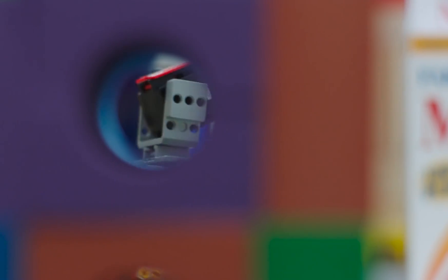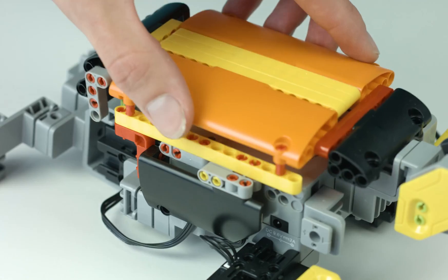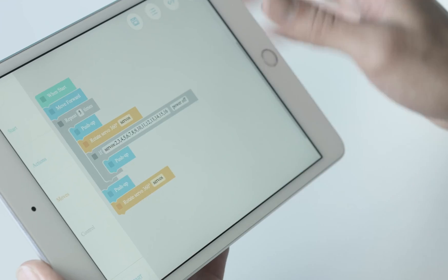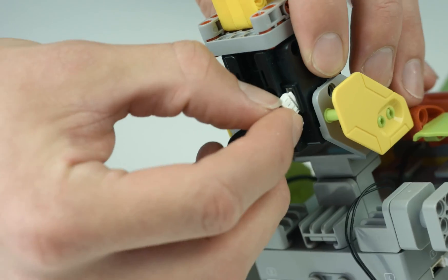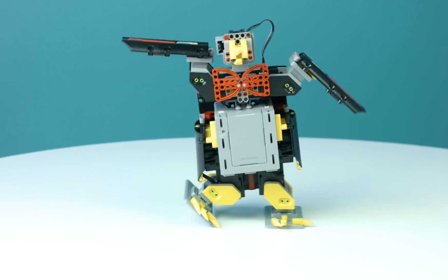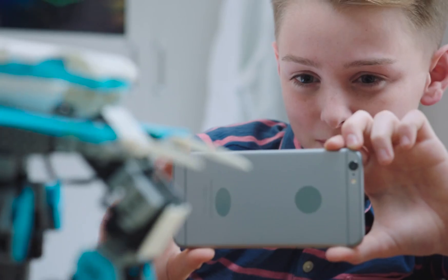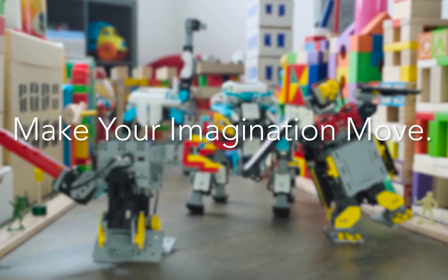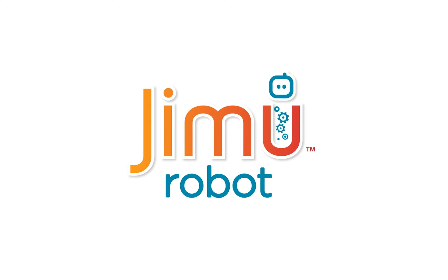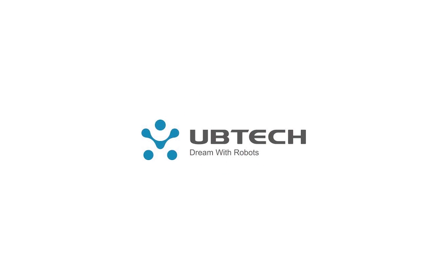Jimu is an exciting way to develop creativity in building, programming, and engineering. It's a place of limitless possibility, infinite transformations, where smarter blocks make smarter robots make smarter kids. Where is this place? Open a Jimu box and find out. Jimu from UB Tech Robotics. Dream with robots.